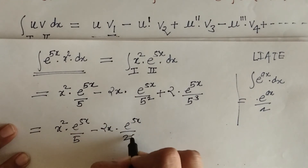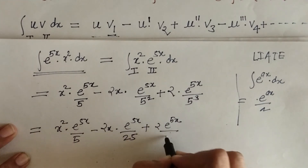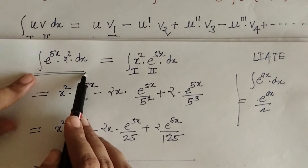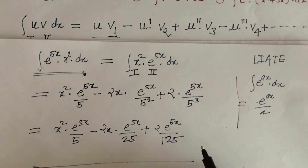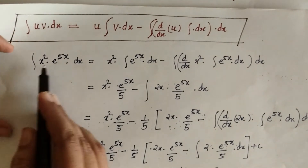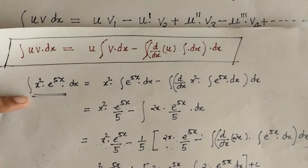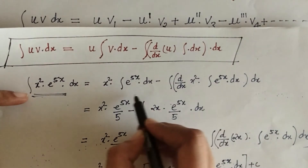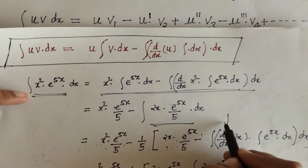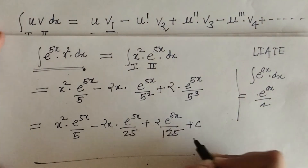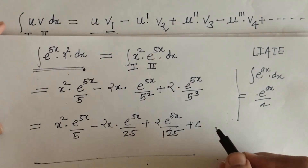Now we can check how easy it is to use this generalized rule — in only two steps we can find the integration of this one. So we have seen how to use the generalized rule of integration by parts. We have also solved the same example using standard integration by parts, where we had to use the rule two times to get the same answer.